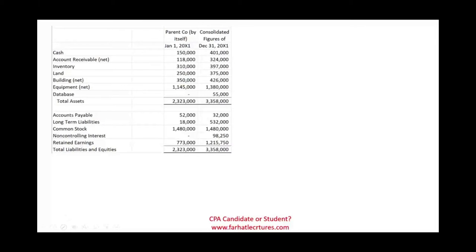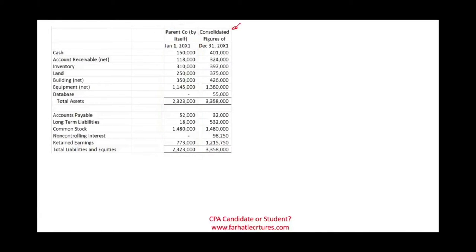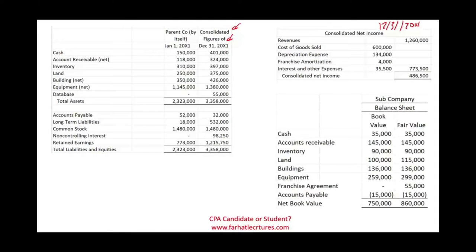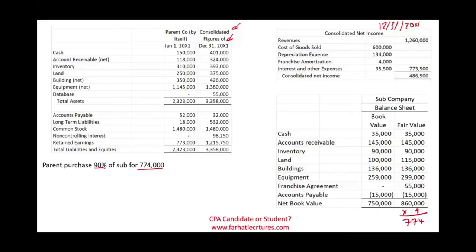Let's look at the example, starting with the balance sheet of the parent company, then the consolidated balance sheet at year end. We're given the parent's balance sheet at the beginning of the year before consolidation, then the consolidated figures as of 12/31/X1 and the consolidated net income. We're also given the subsidiary's balance sheet at acquisition — book value of $750,000 and fair value of $860,000. We purchased 90% of this company for $774,000 ($860,000 × 90%). The NCI is $86,000, which is 10%.